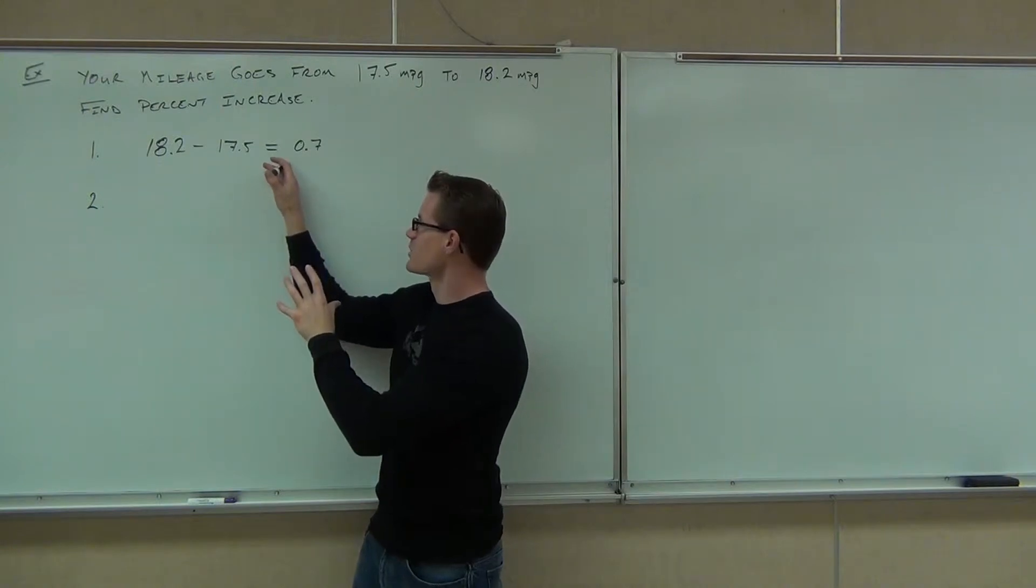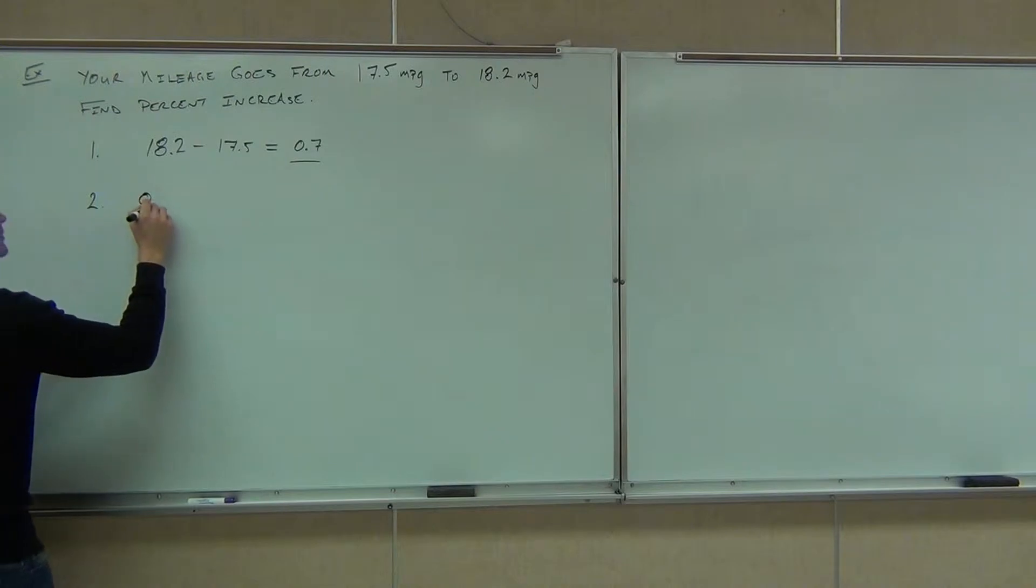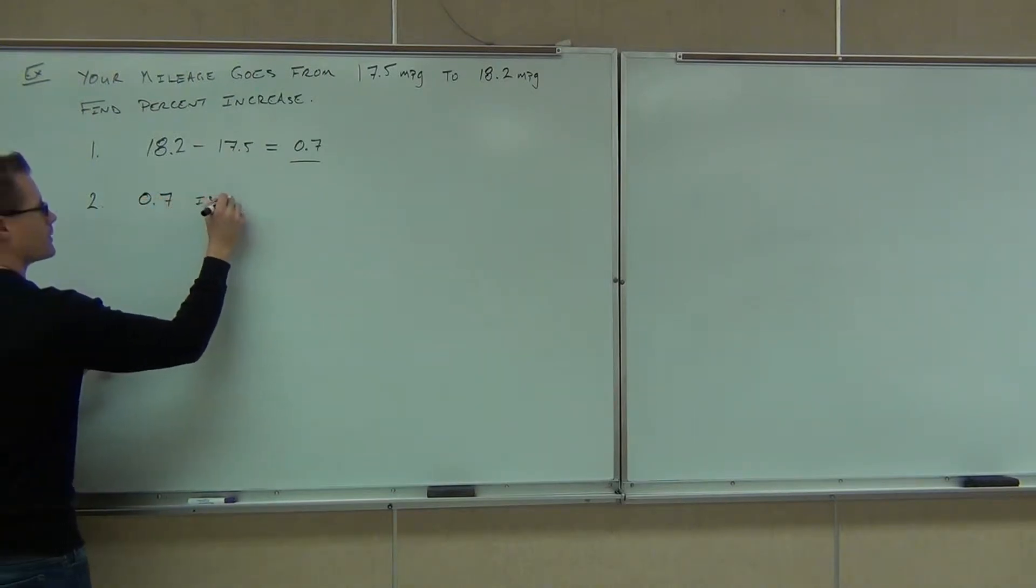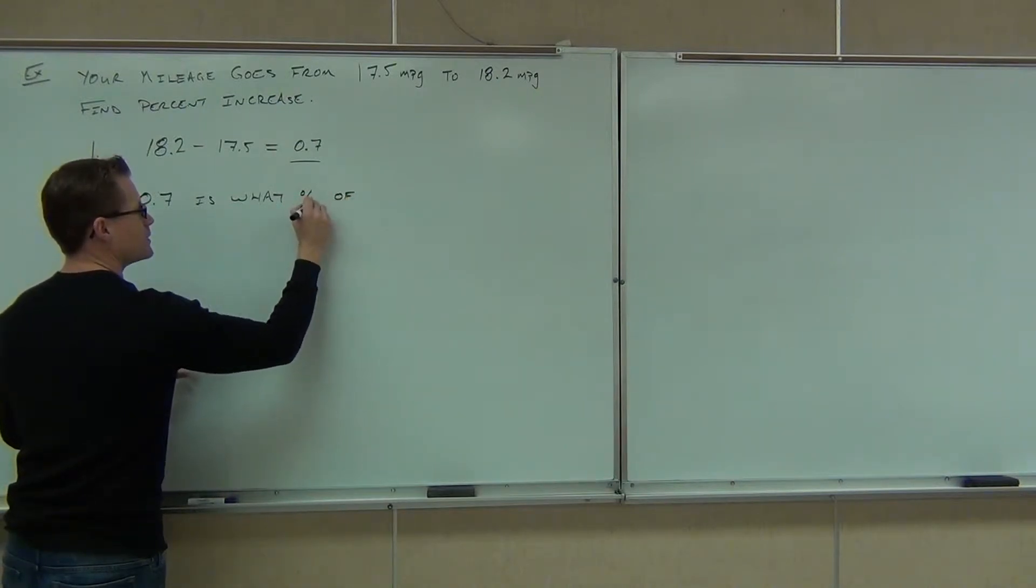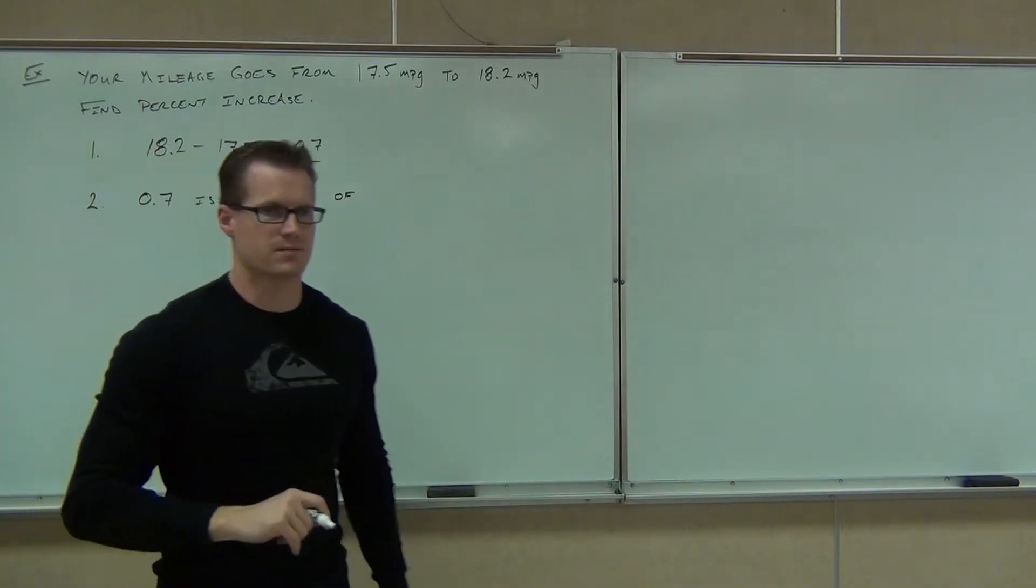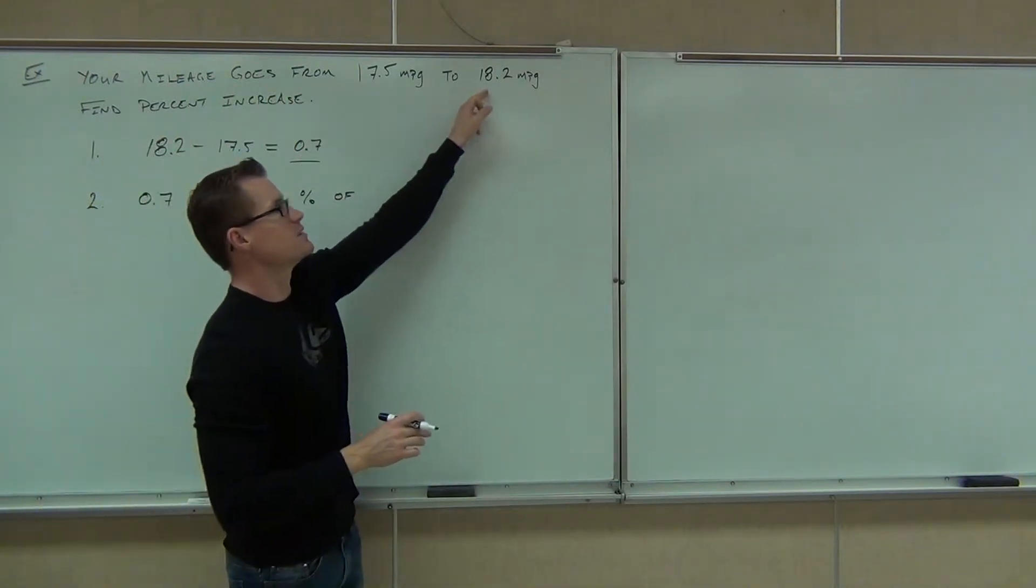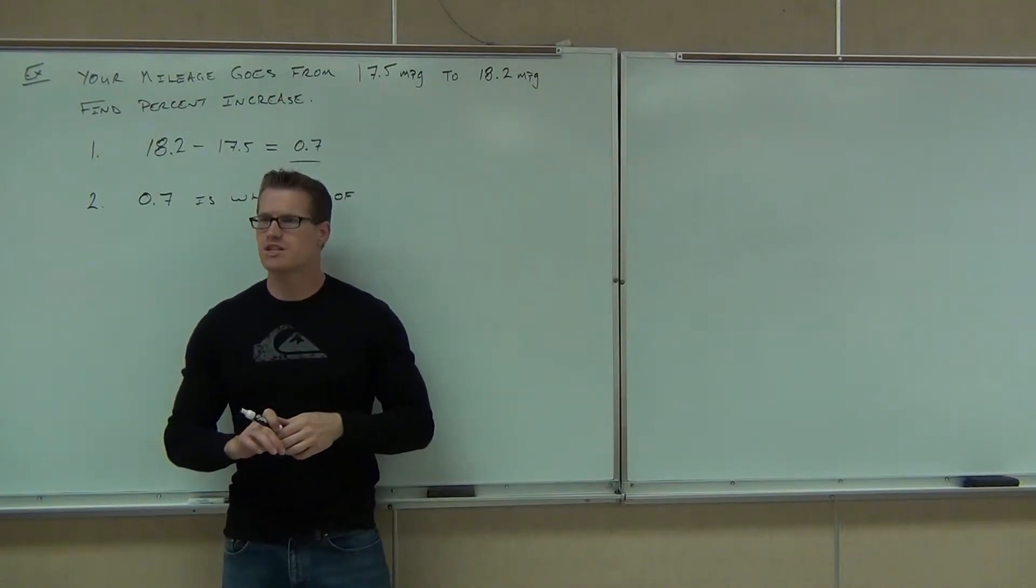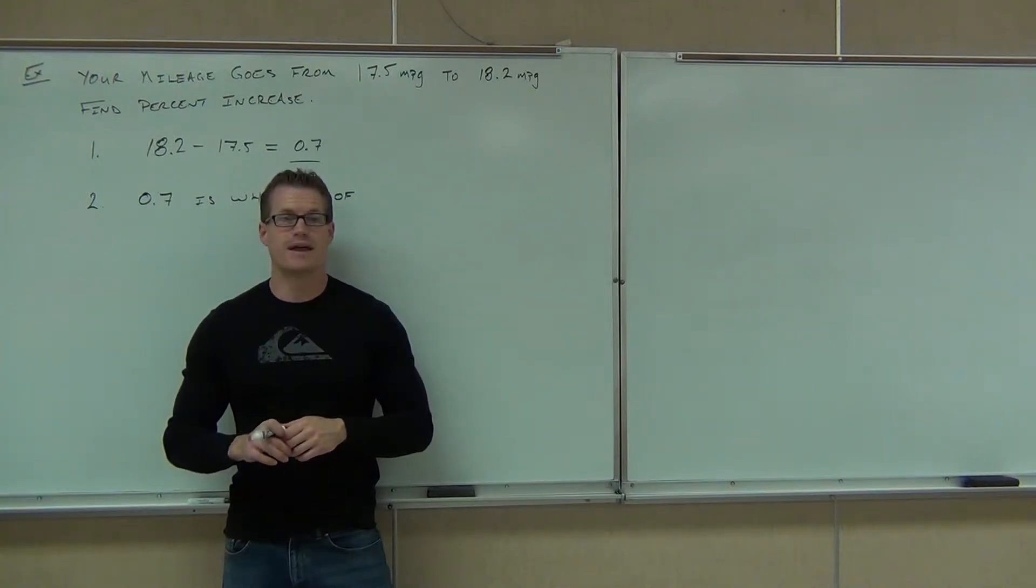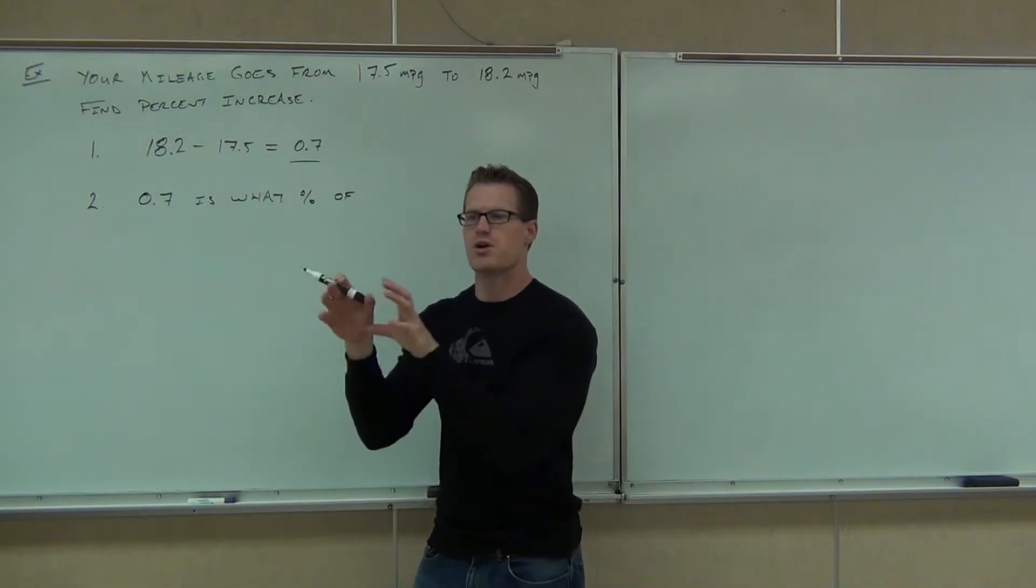What you do is you take your difference. You say 0.7 is what percent of, now here's the part where you've got to get this right. You've got to know whether you're supposed to put the 17.5 or the 18.2 and why. Which one are we supposed to put? 17.5. 17.5 and why. That's your original. That's exactly right.